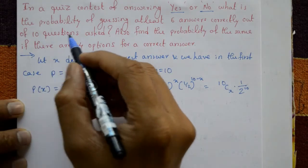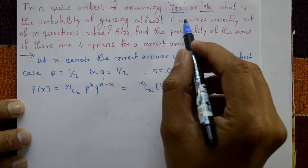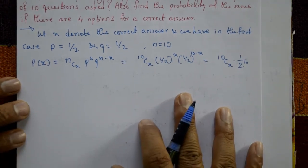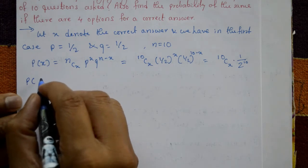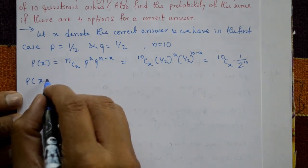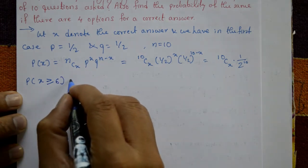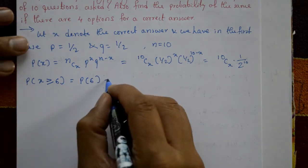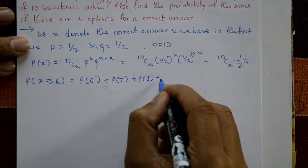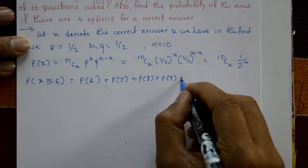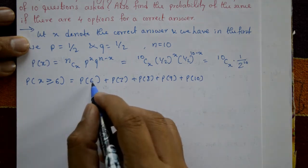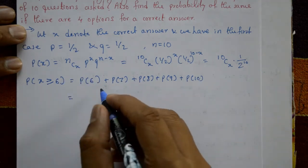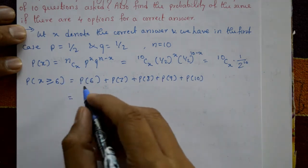Guessing at least six answers correctly out of ten means X ≥ 6, so the possibilities are six, seven, eight, nine, and ten. Therefore, P(X ≥ 6) = P(X=6) + P(X=7) + P(X=8) + P(X=9) + P(X=10).